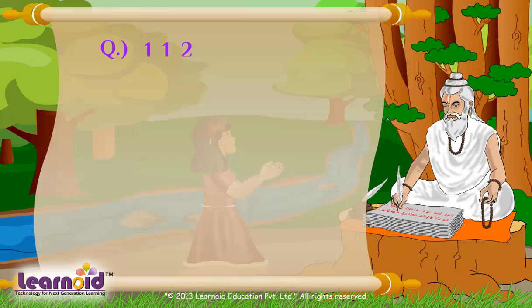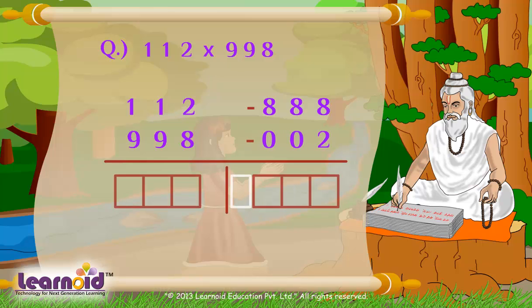Multiply 112 by 998. Write deficiencies using Nikhilam Sutra. It is 888 and 002. Cross subtract: 112 minus 002 equal to 110.